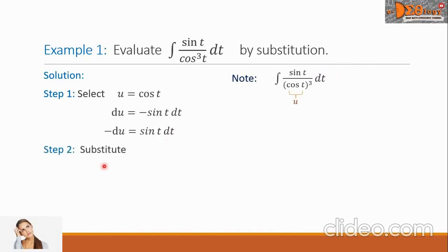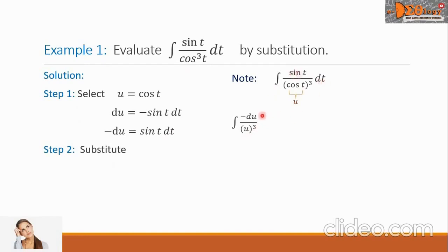Step 2: Substitute the values from Step 1 into the integral. So cosine(t) becomes u with the power 3, and in the numerator, sin(t) dt is replaced by negative du.